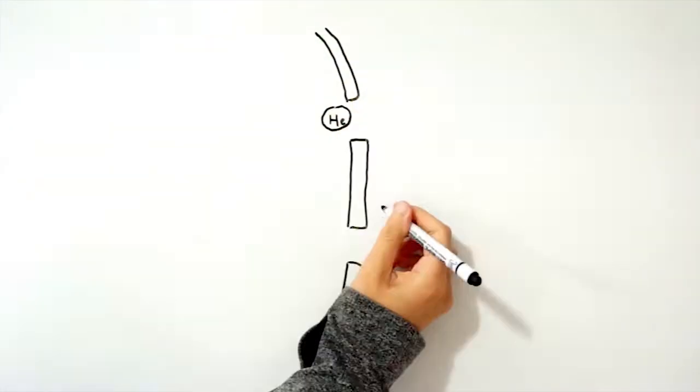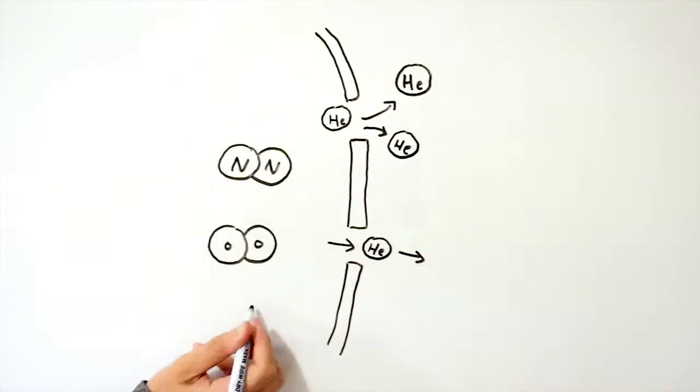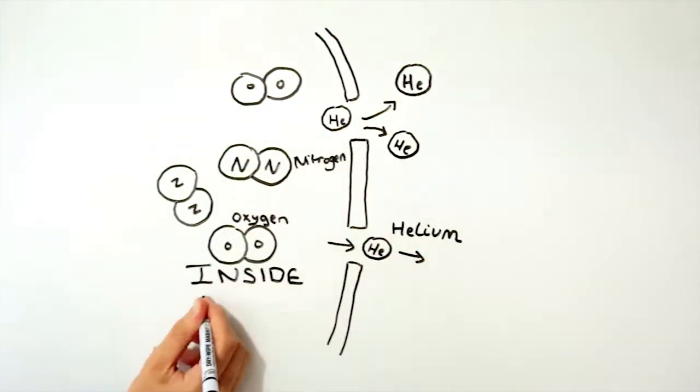With helium being so much smaller than oxygen, it can diffuse through these holes much easier. This means that the gas inside a helium balloon will escape much faster than the air inside an air balloon.